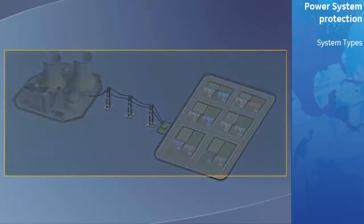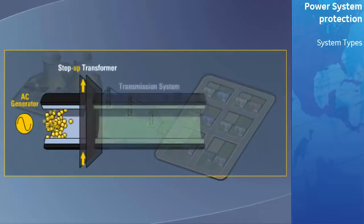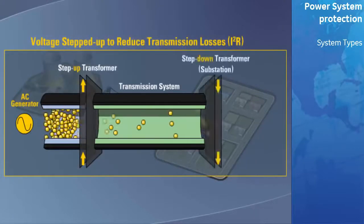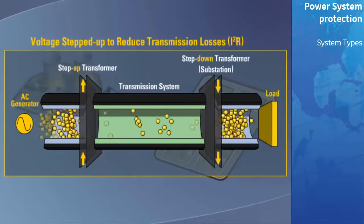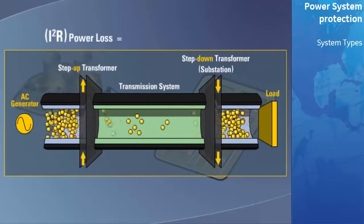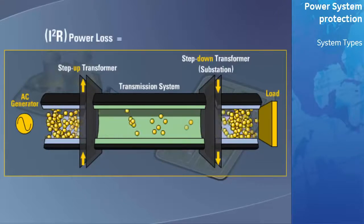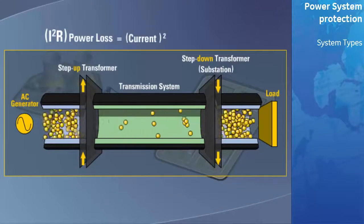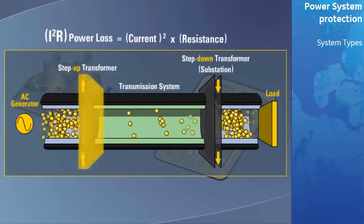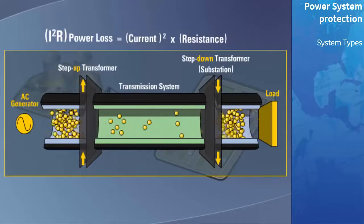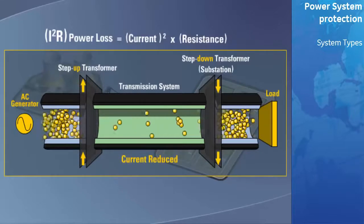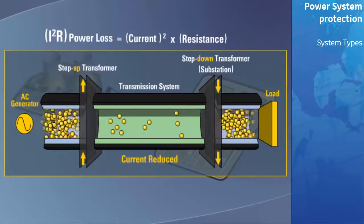Once generated, the voltage is fed to step-up transformers for transmission to reduce the I squared R losses. And then at the substation, it is stepped down for distribution. Given that the power loss during transmission is equal to the current squared flowing through the transmission line times the resistance of the transmission line, the step-up transformer increases the voltage level, thereby reducing the current, resulting in an overall reduction of power loss during transmission.